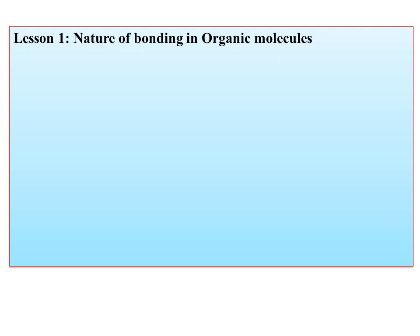That's why in this course we are going to cover all the lessons which are very important in order to understand the reaction mechanism of organic reactions. The first one is the nature of bonding in organic molecules. Whenever a chemical reaction takes place, old bonds have to be broken and new bonds have to be formed. That's why you should understand the nature of the bonding present in organic molecules, which you are going to learn in lesson number one.